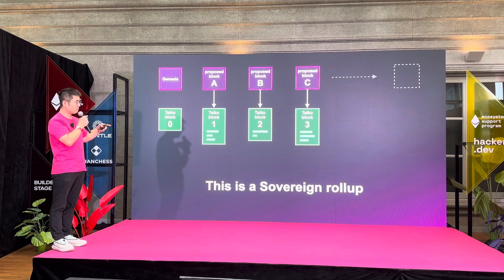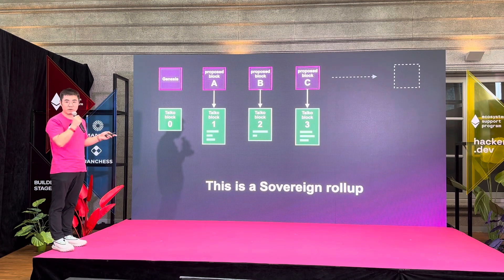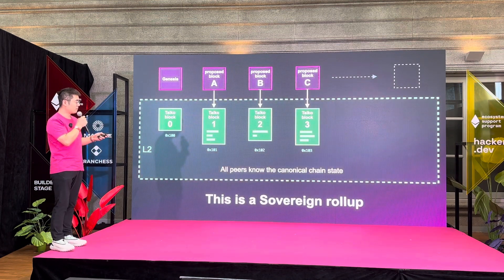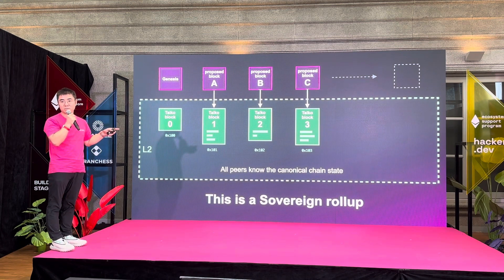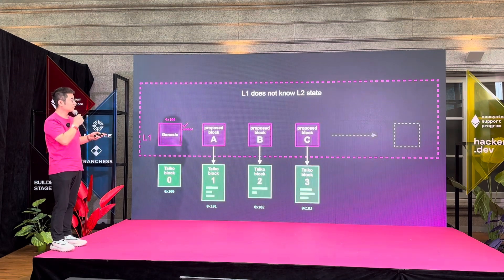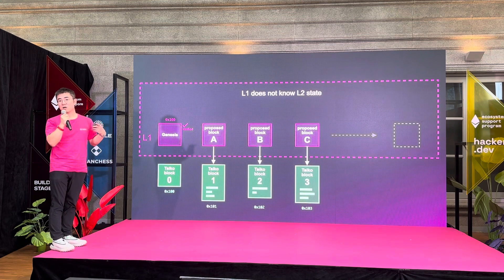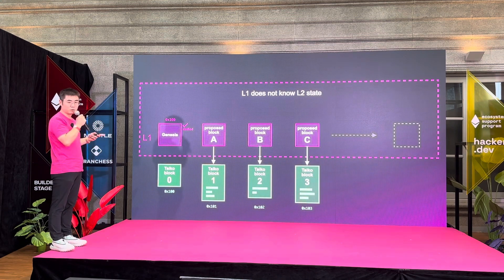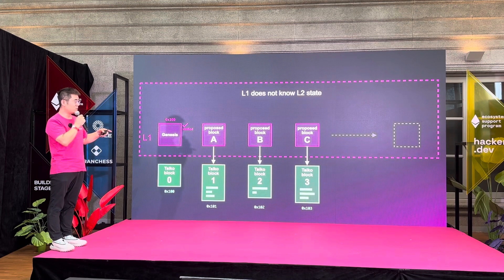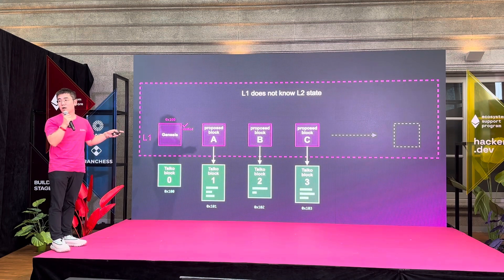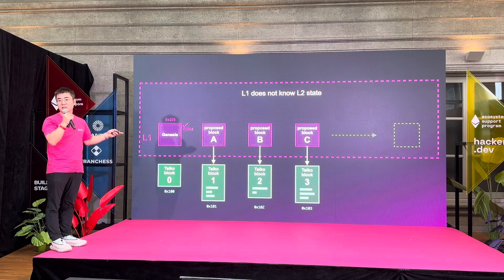If we just do this, we have a sovereign rollup. This rollup allows all the peers on layer two to know the layer two state after each block. It's a functional rollup. The problem is the smart contracts on L1 don't know anything about L2 states, except the first one which can be hard-coded into the L1 smart contract. This is not good because we want to enable interactions between layer one and layer two, for example to bridge assets cross-chain.